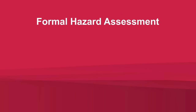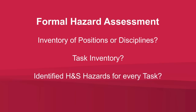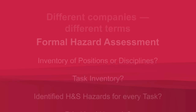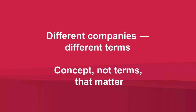Let's start with the formal hazard assessment. In Element B, auditors are asked to score a company's hazard assessment system based on whether they have an inventory of positions or disciplines, whether they have a task inventory, whether they have identified and assessed each health and safety hazard for every task, and whether those hazards have been prioritized. Different companies may use a variety of terms to talk about the same thing. It is the concept, not the terms, that matter. You need to understand the concept to accurately judge a company's hazard assessment systems.